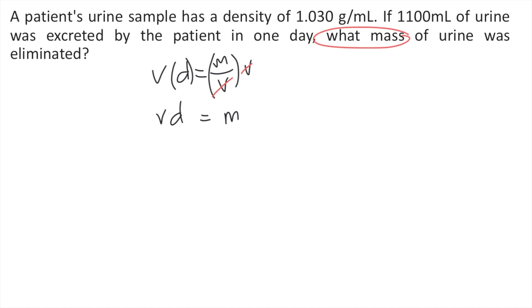Now we substitute the values into the formula. The volume, v, is 1,100 mL times the density, 1.030 grams per mL, and that equals the mass.